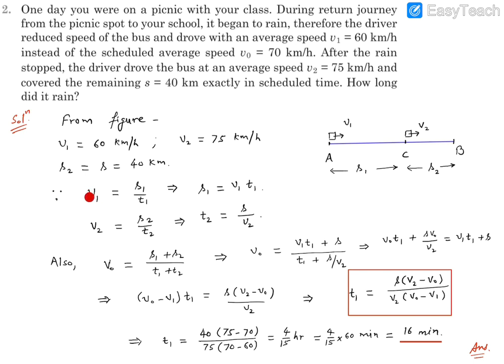simple equation that average speed is nothing but distance upon time. So v1 is going to be s1 by t1, so from here s1 can be calculated which is going to be v1·t1. For the second part of the journey we can write v2 is equal to